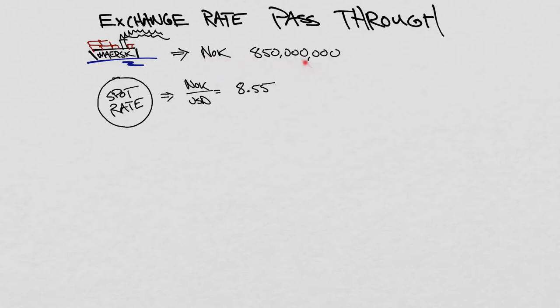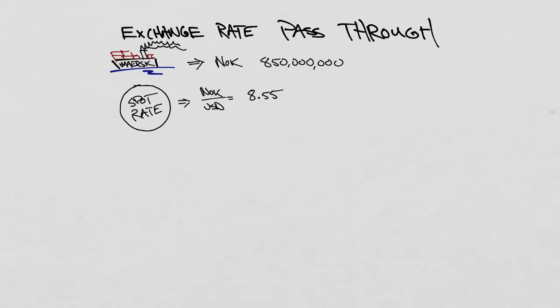If we wanted to figure out what that's worth in terms of US dollars, we can take the spot rate of Kroner versus USD, 8.55, and convert. Since this is Kroner versus USD in terms of the ship price and this is Kroner USD in terms of the spot exchange rate, we can take the two numbers and divide them by each other to give what the ship cost would be in USD.